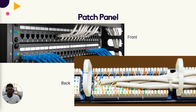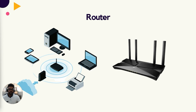Using a patch panel makes it easier to move devices around because the cable between the wall jack and the patch panel never moves. We usually keep our network router in a network closet. The router is an advanced networking device that connects two networks together. When traffic needs to leave the internal network, it is always sent to the router and then forwarded to its destination. All external traffic flows through the router.